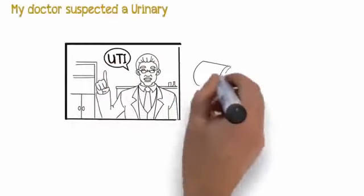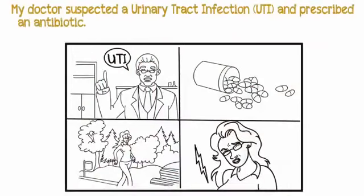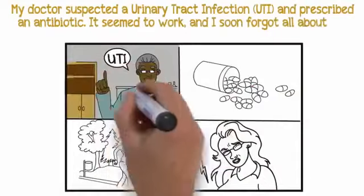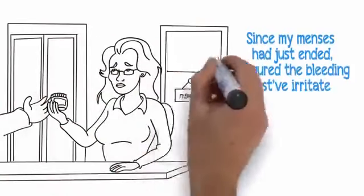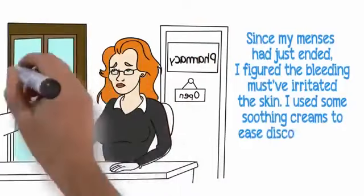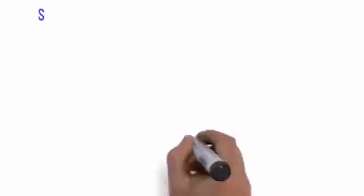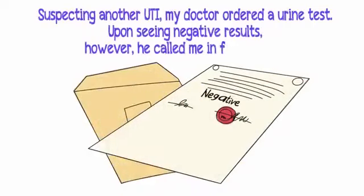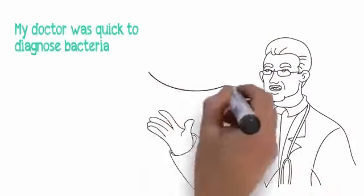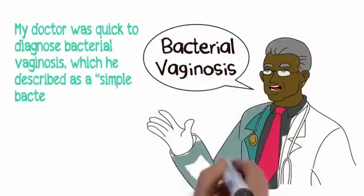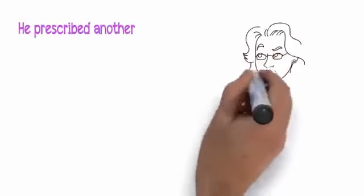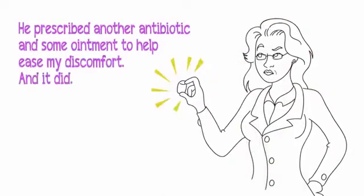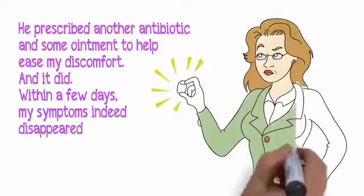My doctor suspected a urinary tract infection, UTI, and prescribed an antibiotic. It seemed to work and I soon forgot all about the incident until a few weeks later it recurred. I used some soothing creams to ease discomfort, but my symptoms continued to worsen by the day. Suspecting another UTI, my doctor ordered a urine test. Upon seeing negative results, he called me in for an exam. My doctor was quick to diagnose bacterial vaginosis, which he described as a simple bacterial infection that should go away in a few days. He prescribed another antibiotic and my symptoms indeed disappeared.